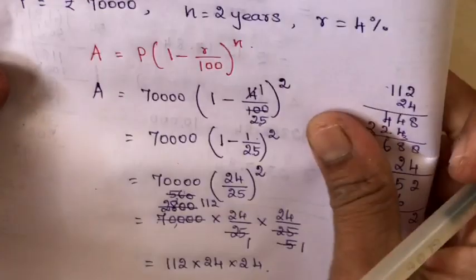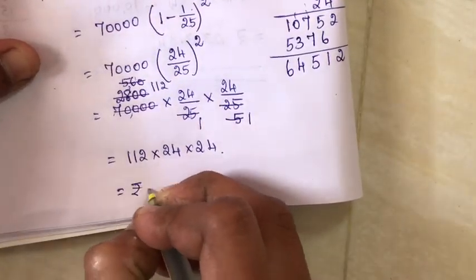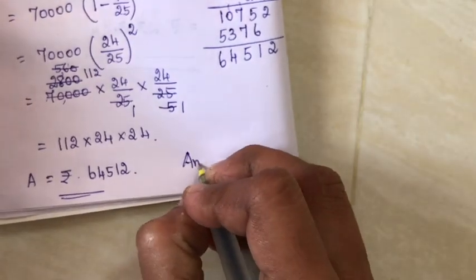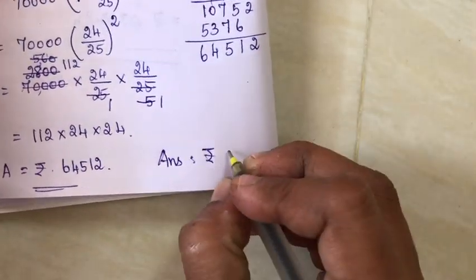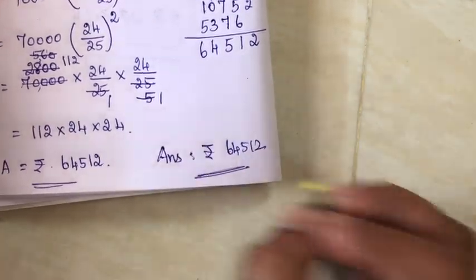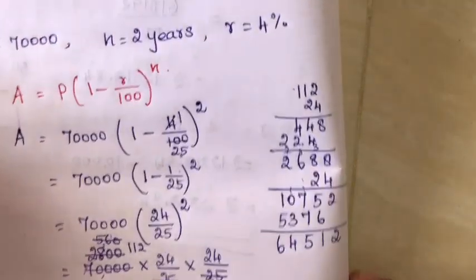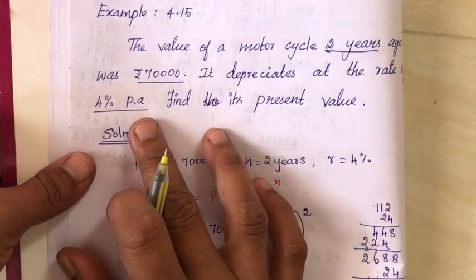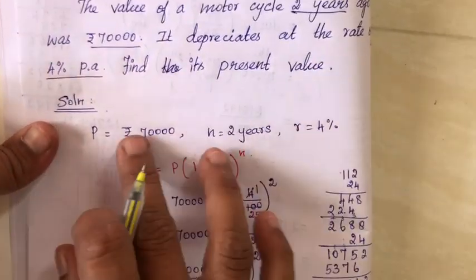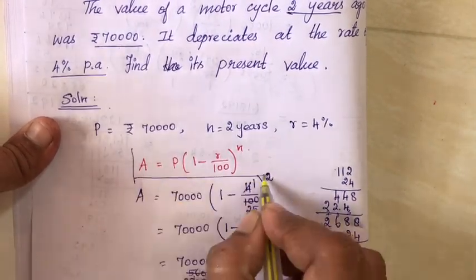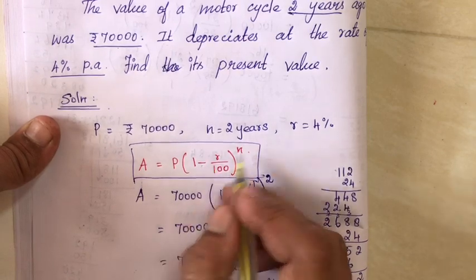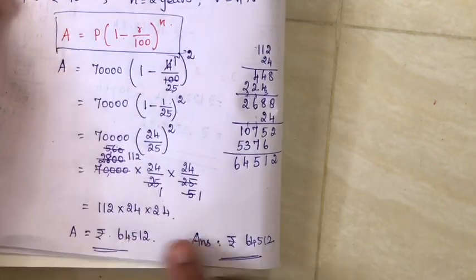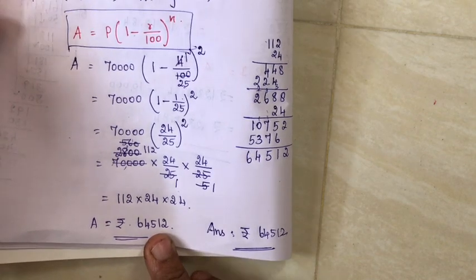So, after 2 years, the present value of the motorcycle is 64,512 rupees. That is the answer.